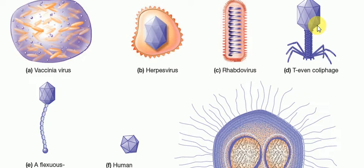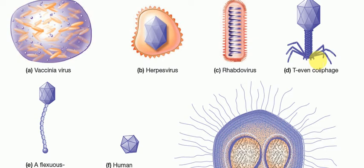For T-even coliphage, you have an icosahedron head, and beneath that a spring-type protein structure. There are fork-like structures beside the spring lumen, through which the DNA is inserted into the targeted cell. This is a typical bacterial phage. There are also flexuous tail phages — various morphological differences are visible in these virus images.